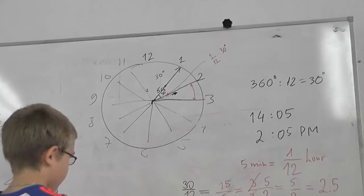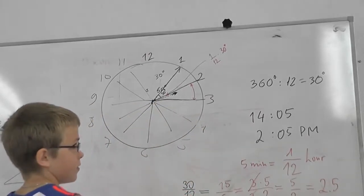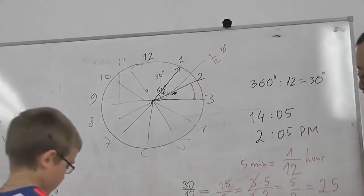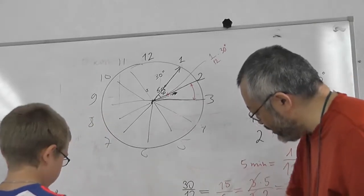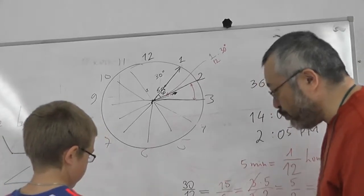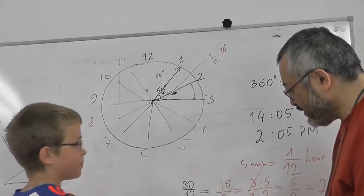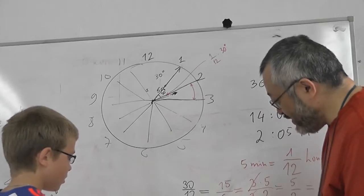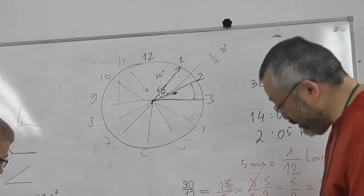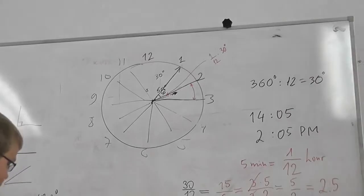So, 30 and two and a half is 32 and a half. Yeah. So this is 30 and this is two and a half. So the answer is 32 and a half. Yeah. Or 32 in decimal. It's 32 point... 32 point five. This is... 32 point five degrees. Okay.